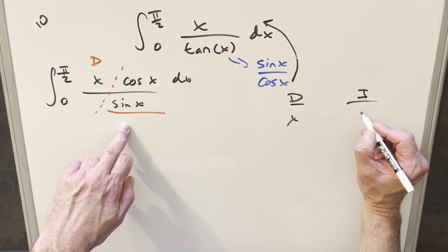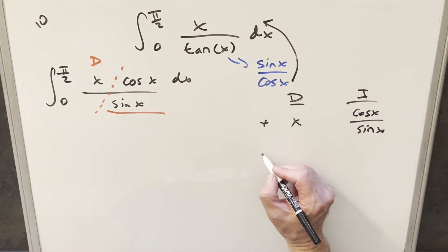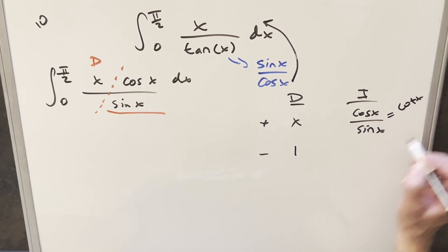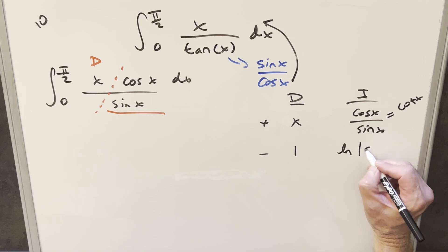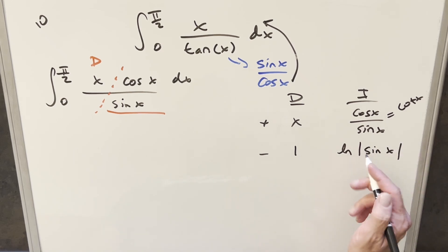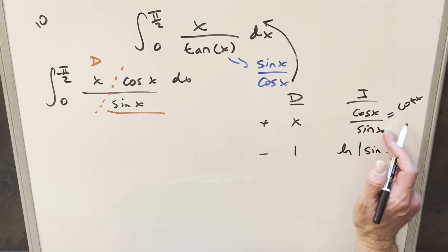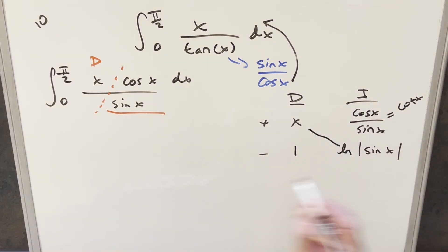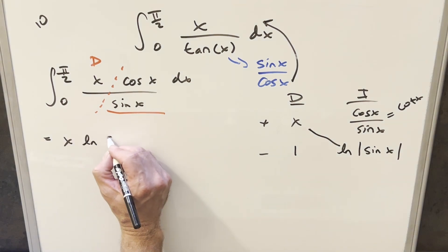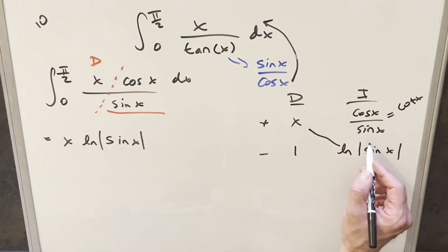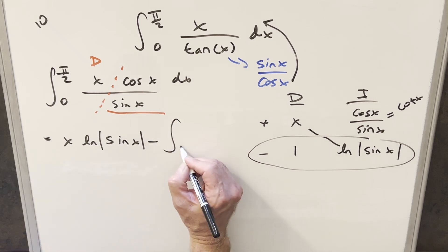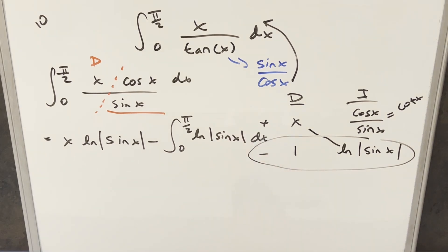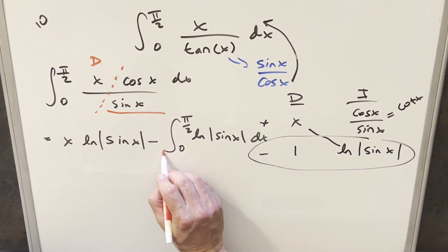Differentiating x and integrating the other part. The derivative of x is just 1. For the integral, keep in mind cos(x)/sin(x) is the same as cot(x). The integral of that is going to be natural log of the absolute value of sin(x). You can verify this with a u-substitution for sine — the derivative is right there in the numerator. So we get natural log of sin(x) on the diagonal. The second part gives us an integral from 0 to π/2 of natural log of the absolute value of sin(x), with a minus sign up front. This is an integral I've done before, so I know this is going to work.